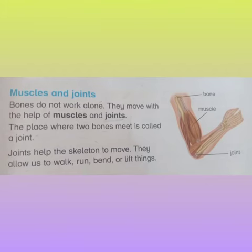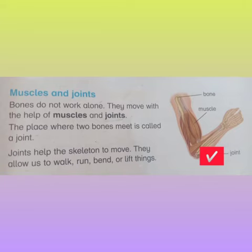Next topic is Muscles and Joints. The place where two bones meet is called a Joint. Joint helps the skeleton to move. They allow us to walk, run, bend, or lift things.